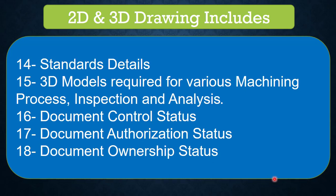Clearance details are important for fits and mating parts — every dimension should have clearance details. If there is no specific clearance given, the operator can use the standard template to identify the clearance. Number fourteen, standard details — these cover tolerancing or standard parts usage in dies like cams, springs, and other standard parts. Number fifteen, 3D models are required for various machining processes as well as inspection and analysis. Every drawing should also have a document control status so we can refer to the drawing level, and any revisions must be updated so the latest drawing is used for manufacturing and maintaining the dies.